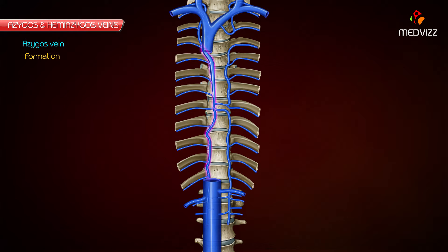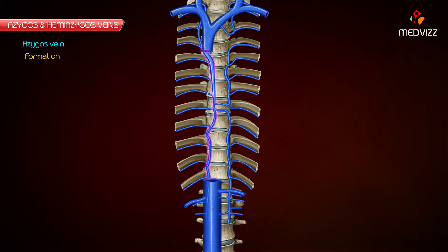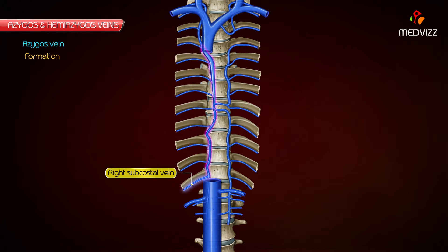Formation. The formation of the azygous vein is variable. It may be formed by the union of the right subcostal and right ascending lumbar veins at the level of the 12th thoracic vertebra. It may arise from the posterior aspect of the inferior vena cava near the renal veins. It may also extend as a continuation of the right subcostal vein.